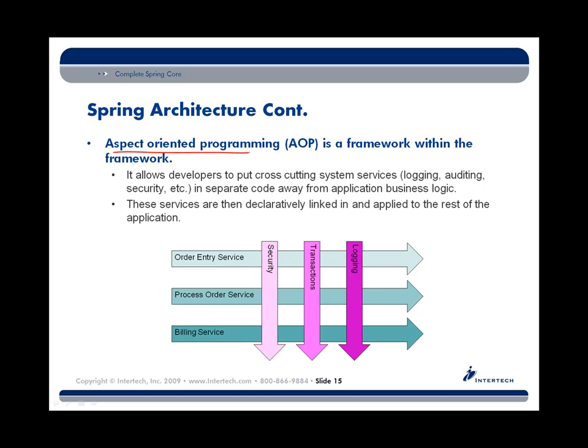What does AOP give us? It allows us to develop what are called cross-cutting system concerns or services in code that is isolated away from business logic. Think about how you might have handled logging in your most recent application.